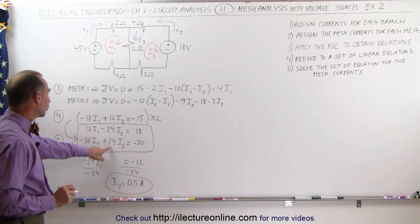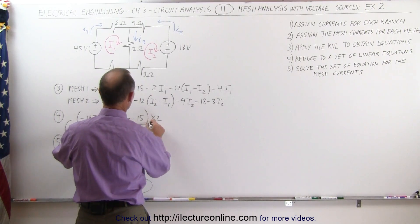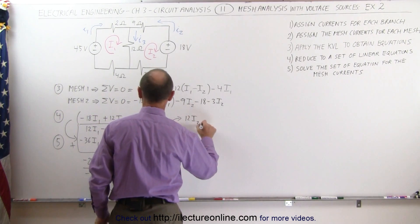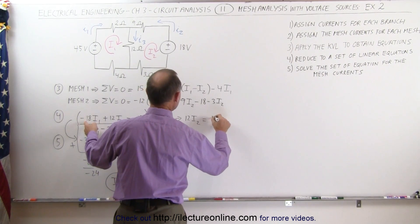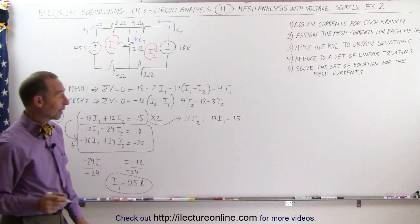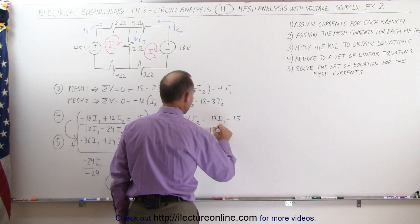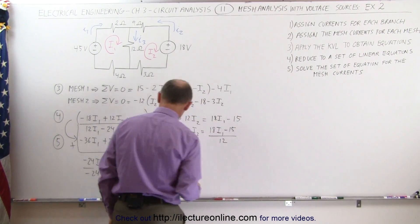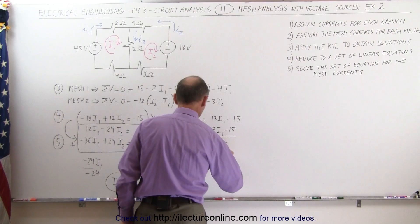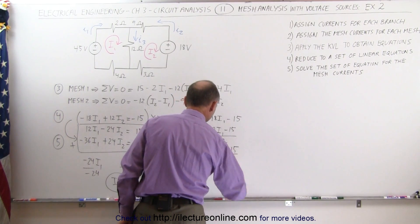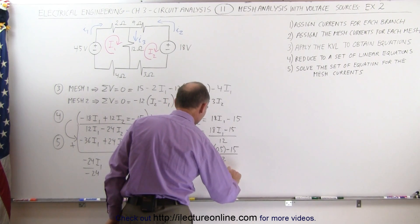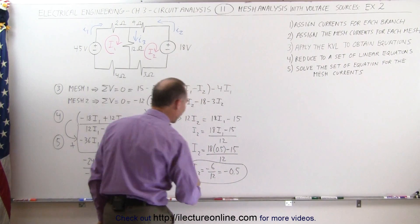That allows me to solve for I2. Taking this equation, I'll solve for I2 to find mesh current I2. 12 I2 equals plus 18 I1 minus 15. Dividing both sides by 12, I get I2 equals (18 I1 minus 15) divided by 12. Substituting I1 equals 0.5: I2 equals (18 times 0.5 minus 15) divided by 12. That's 9 minus 15 equals minus 6. I2 equals minus 6 over 12, which equals minus 0.5.